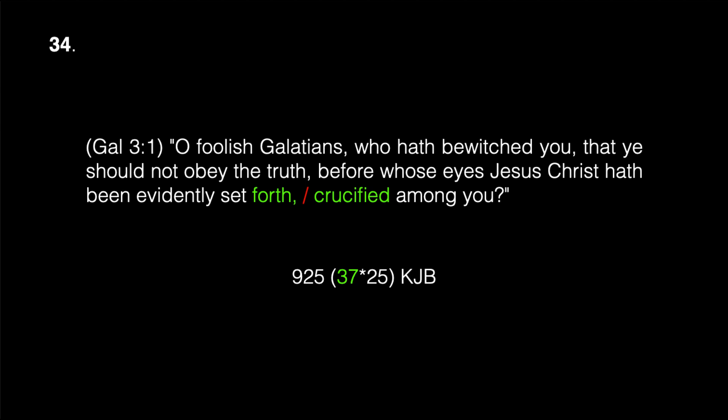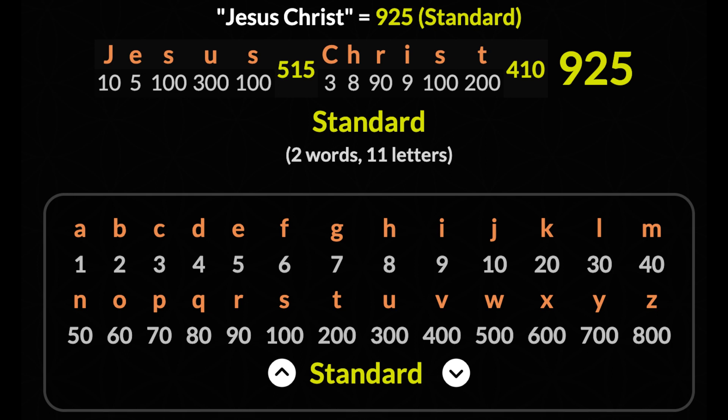The thirty-fourth occurrence of crucified is in Galatians 3:1: 'O foolish Galatians, who hath bewitched you that ye should not obey the truth, before whose eyes Jesus Christ hath been evidently set forth crucified among you?' The word 'forth' and 'crucified' combined appear 925 times in the King James Bible, which is a multiple of 37. Using the standard cipher, the phrase 'Jesus Christ' has a value of 925 — that is 37 times 25.